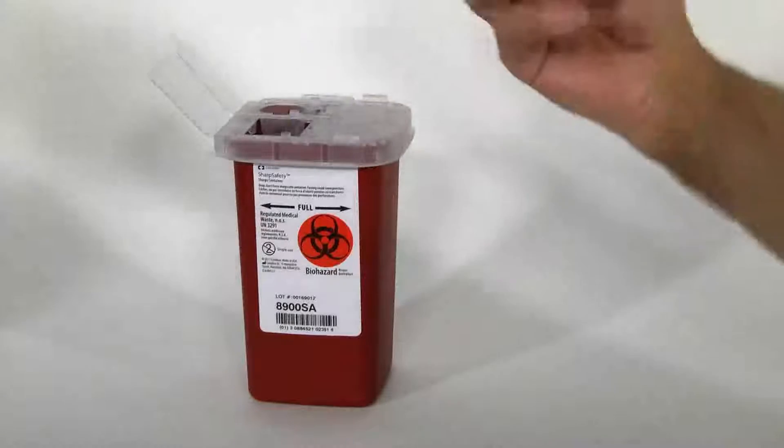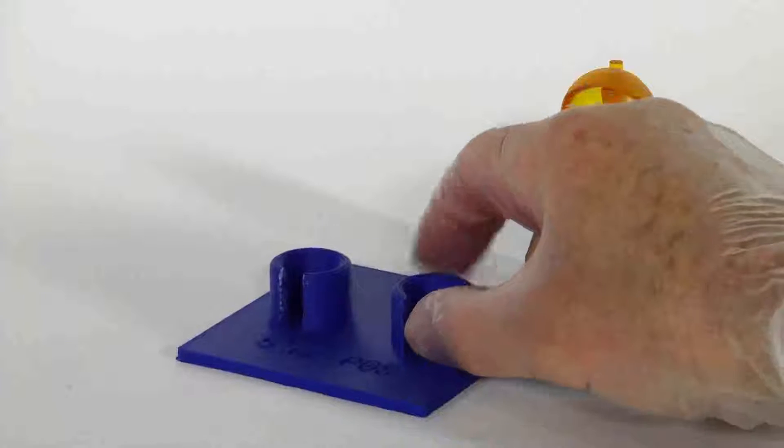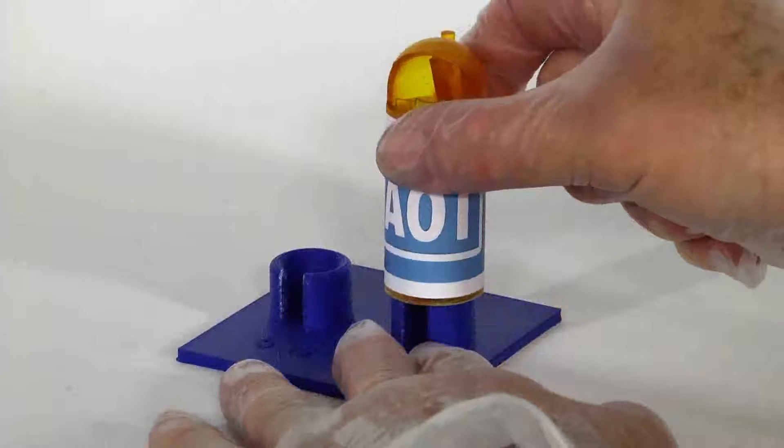Return the base to the bench and install the opener on it. Your AOT opener and base are now ready to use again and again.